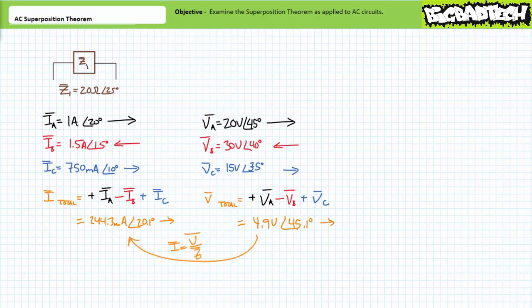Note that the final summated differential of 4.9 volts at an angle of 45.1 degrees would indeed induce 244.3 milliamps of current at an angle of 20.1 degrees through an impedance of 20 ohms at an angle of 25 degrees. This is to suggest that your final results should be supportive of one another, and there exist ample opportunities to check your work via Ohm's Law, Kirchhoff's Current Law, and Kirchhoff's Voltage Law.